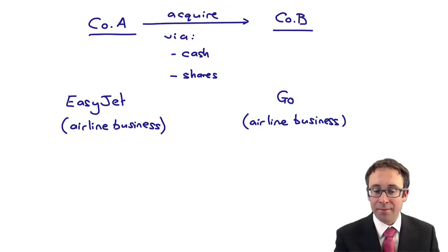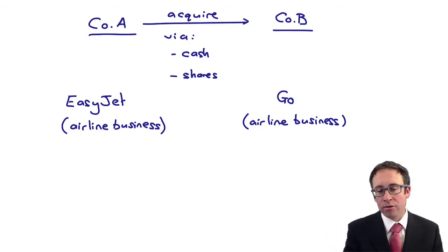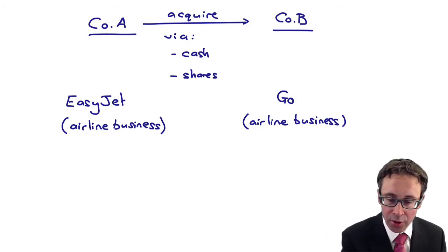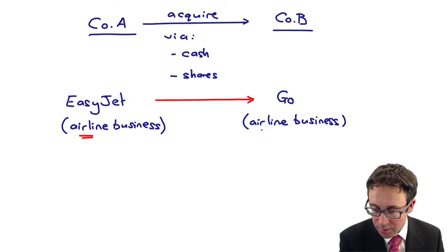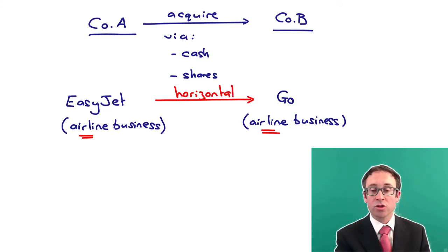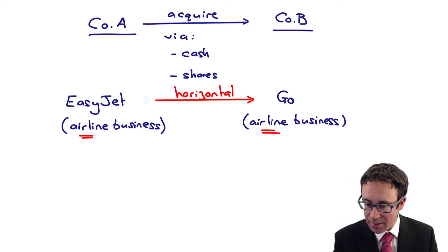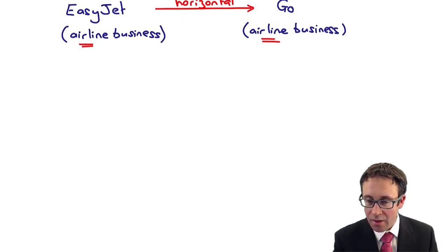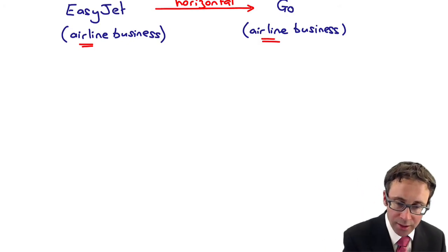What you've got there is an example of growth via acquisition. Ryanair, EasyJet's competitor, grew internally - a bit of organic growth. But EasyJet acquired Go. Because they are in the same industry, that is referred to as a horizontal acquisition, whereby you buy a business in the same industry.